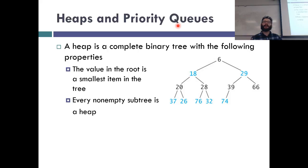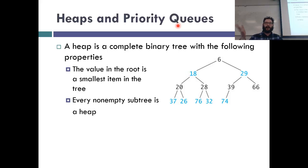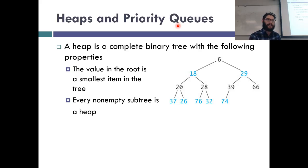We're going to use heaps to build a priority queue — a queue where people get to cut in line because they're more important. The lower your number, the more important you are. For example, in a hospital triage situation, the person with a head injury or heart problems should be seen before someone with a broken arm, because those people are more likely to die without medical intervention. The medical system essentially uses a priority queue.